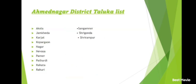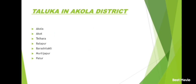District list: 1. Ahmadnagar, 2. Akola, 3. Amravati, 4. Aurangabad, 5. Beed, 6. Bhandara, 7. Buldhana, 8. Chandrapur, 9. Dhule, 10. Gadchiroli, 11. Gondiya, 12. Hingoli, 13. Jalgaon, 14. Jalna, 15. Kolhapur, 16. Latur, 17. Mumbai City, 18. Mumbai Suburban, 19. Nagpur, 20. Nanded, 21. Nandurbar, 22. Nashik, 23. Osmanabad, 24. Palghar, 25. Pune, 26. Raigad, 27. Ratnagiri, 28. Sangli, 29. Satara, 30. Sindhudurg, 31. Solapur, 32. Thane, 33. Wardha, 34. Washim, 35. Yavatmal.